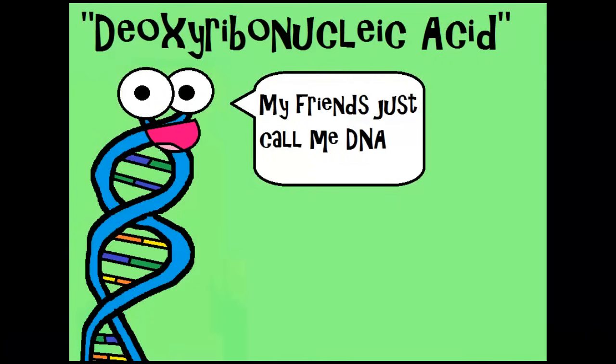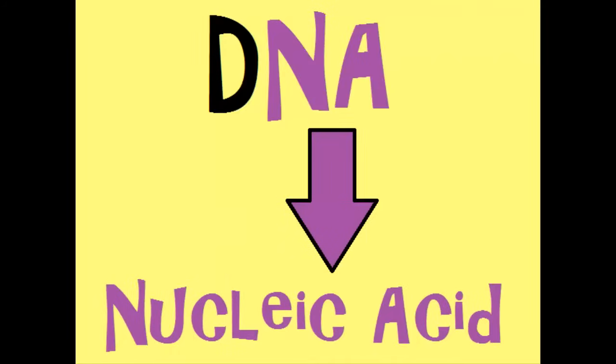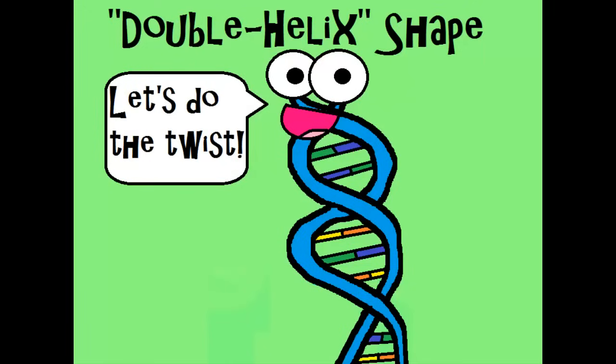So DNA stands for deoxyribose nucleic acid. The deoxyribose is a sugar, and nucleic acid is the type of biomolecule that it is. DNA is also double-stranded. That means it has two strands, and it's in a double helix shape, also known as a twisted ladder.